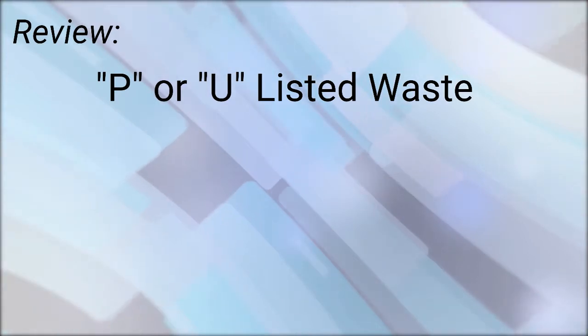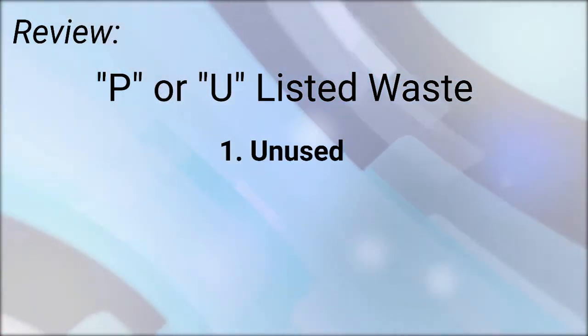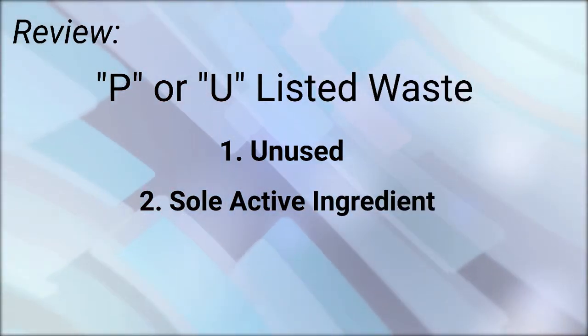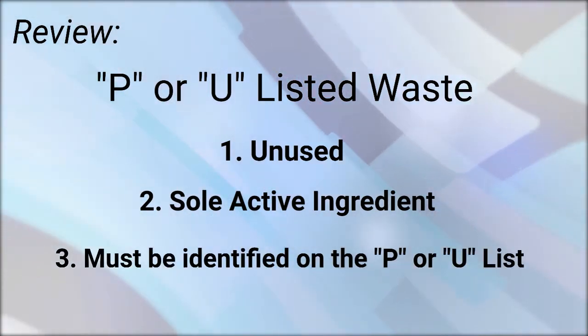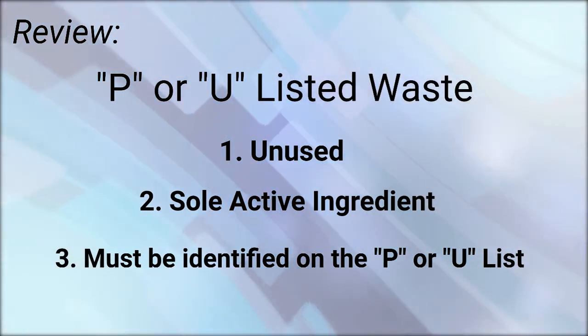Likewise, if you find you have a sole active ingredient but it's not on either of those two lists, it's not regulated for that reason. To summarize: to be a P or U listed waste, you must have something that is unused — never been through a process. Second, it must have a sole active ingredient. Third, that sole active ingredient must be identified on either the P list or the U list.